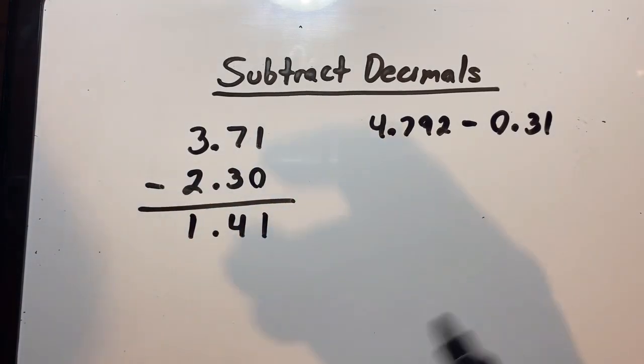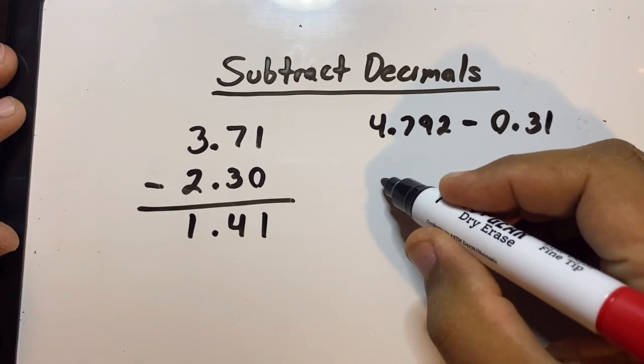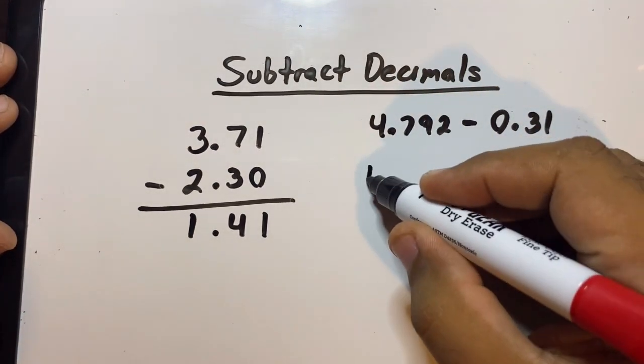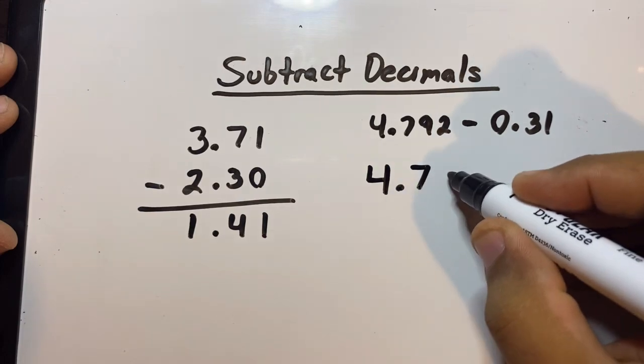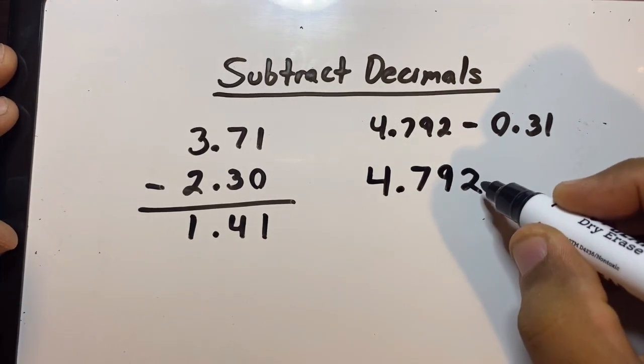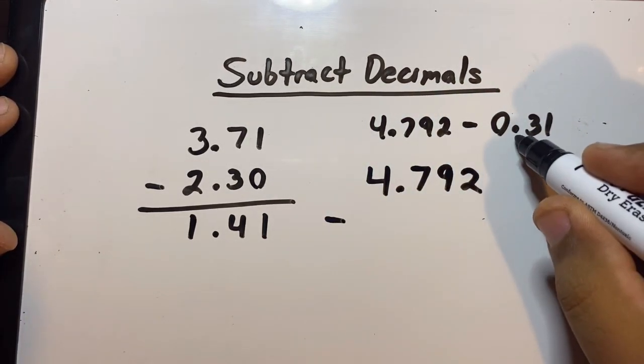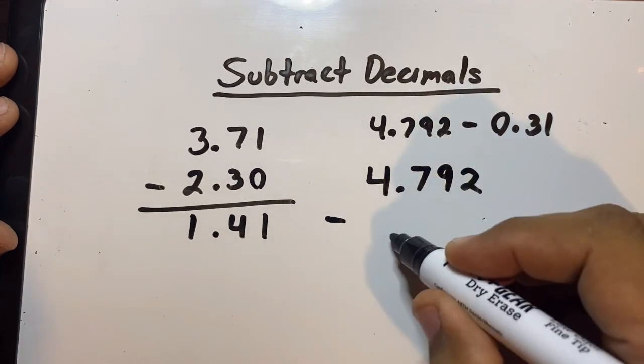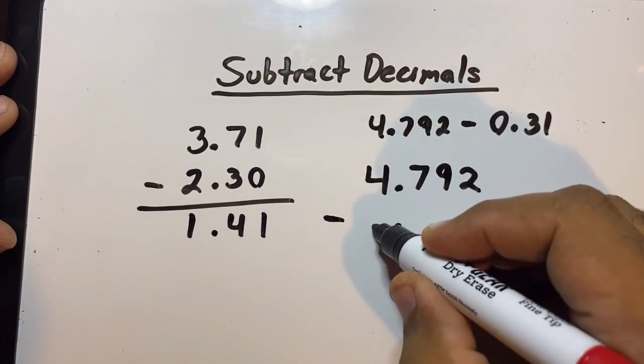Well that's all right, we'll just do it like we normally do. We rewrite it. Instead of going horizontal, we write it vertically. So 4.792 minus... remember the decimal point will tell you where it goes, so the decimal point goes here, the 0 goes here, and then 31.